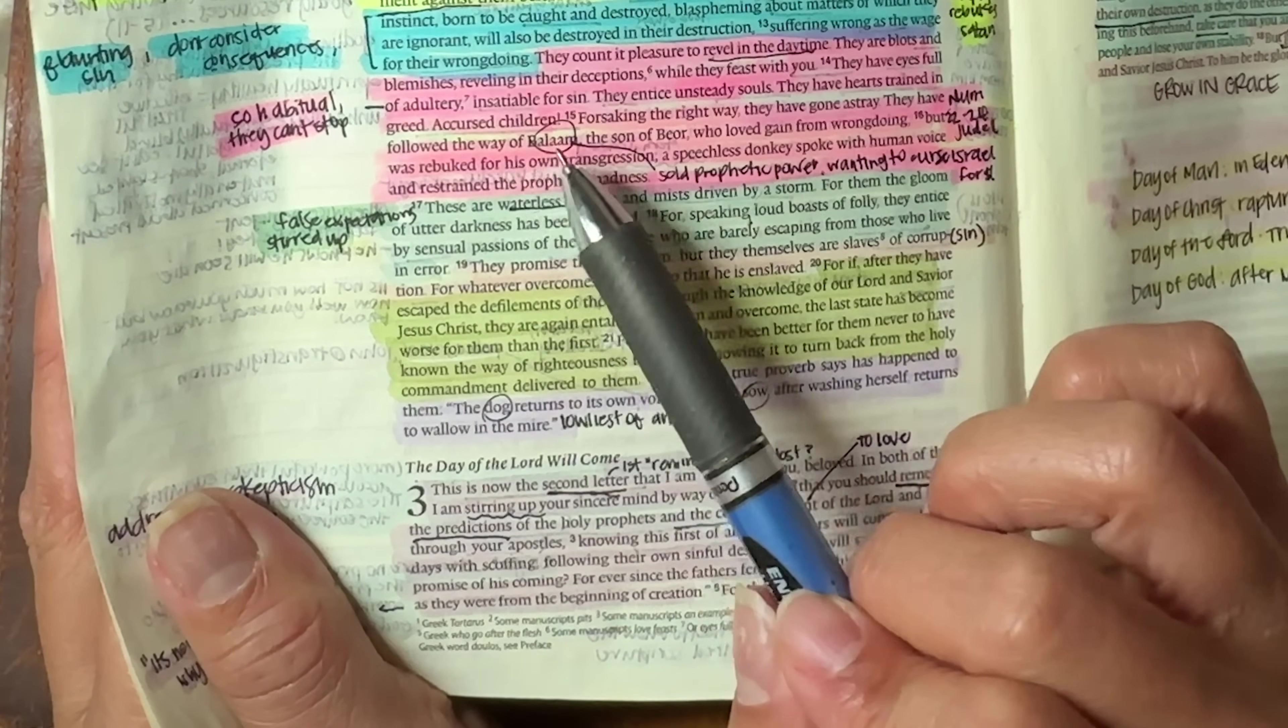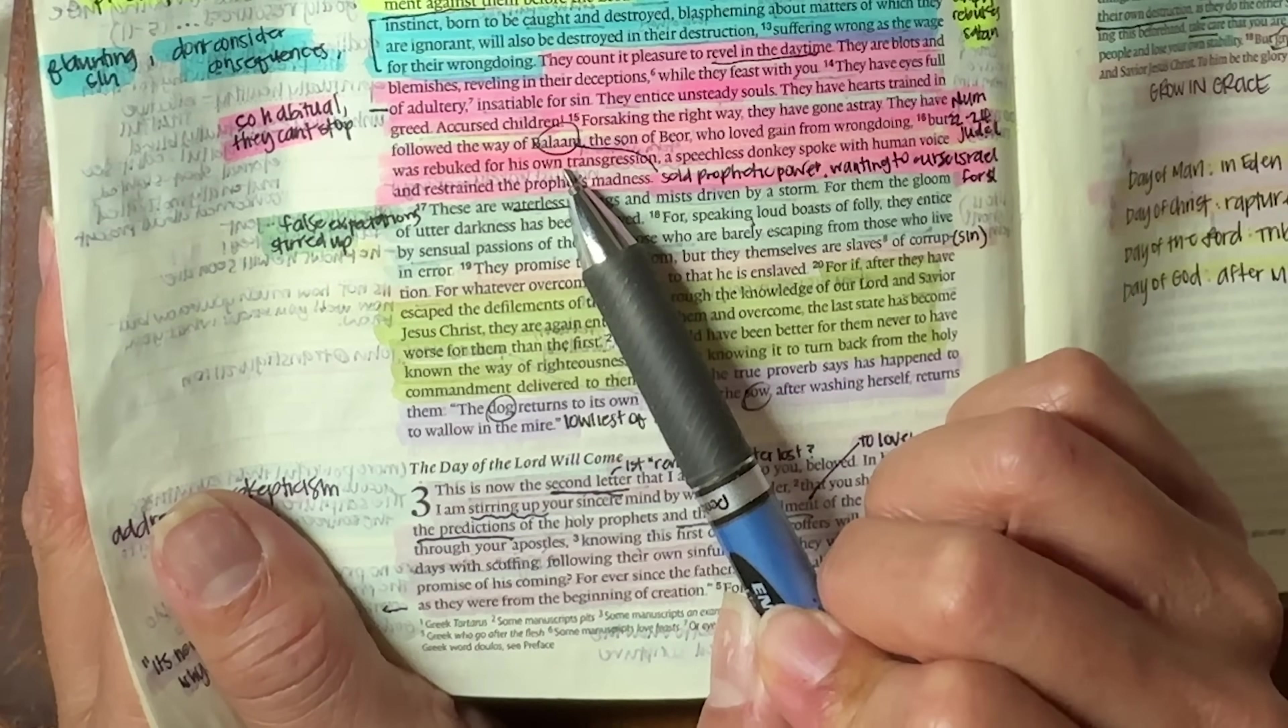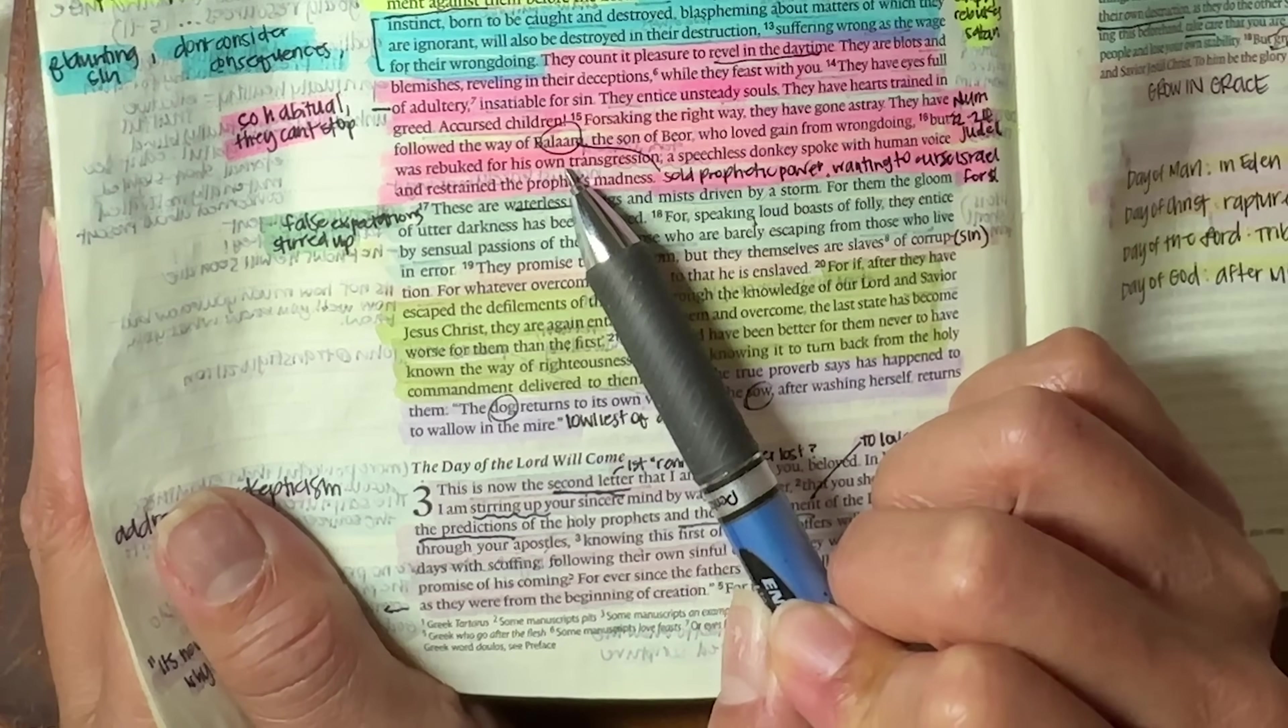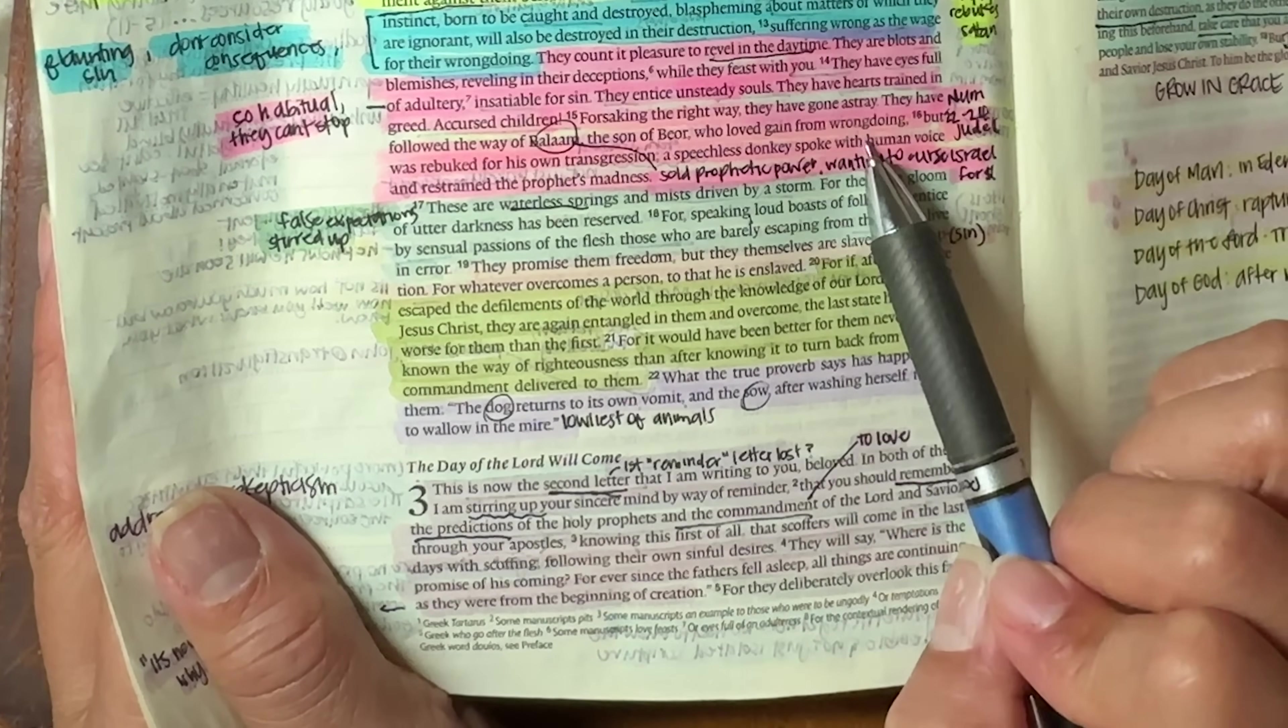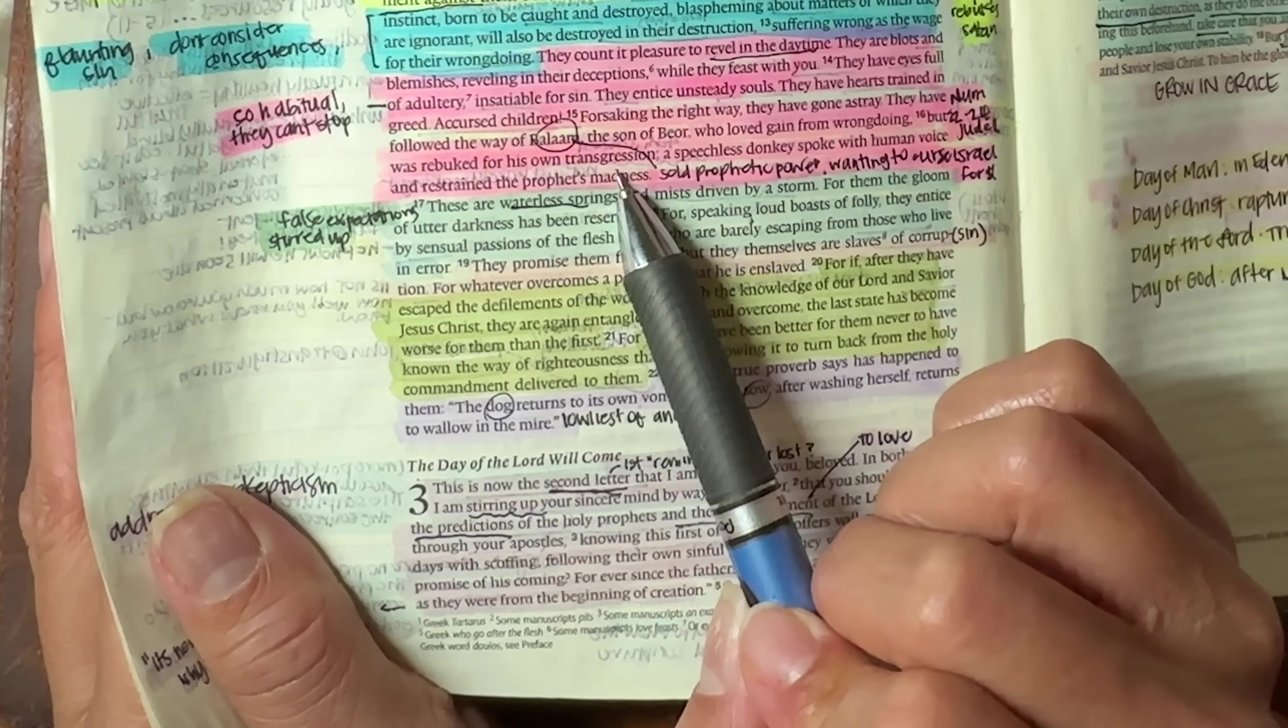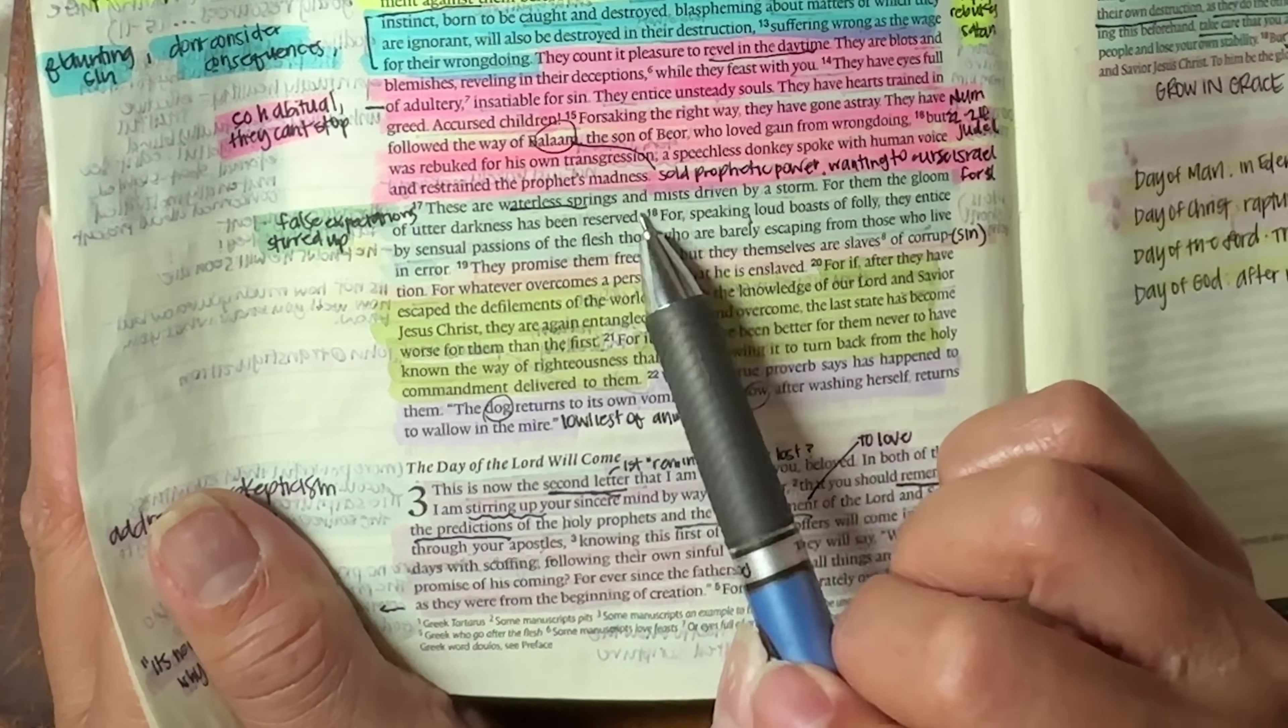They have followed the way of Balaam. Remember, Balaam is the one who sold his prophetic power. He was wanting to curse Israel, even though he couldn't. Remember in the end, the son of Beor, who loved gain from wrongdoing, but was rebuked for his own transgression. A speechless donkey spoke with human voice and restrained the prophet's madness. Remember the donkey was like, why are you doing that?